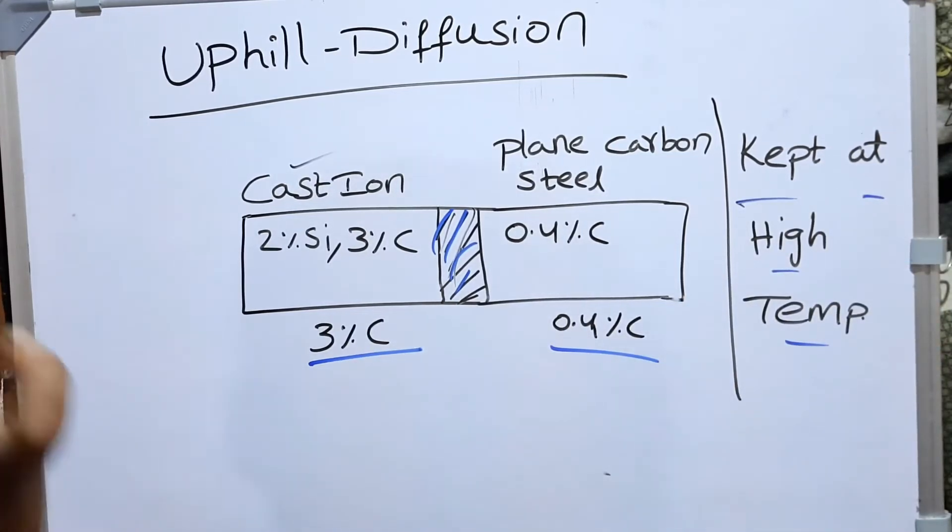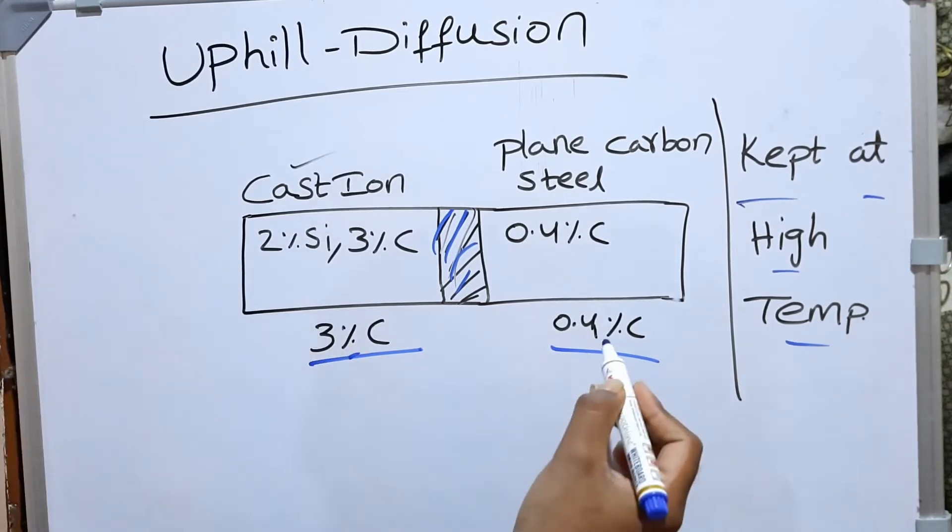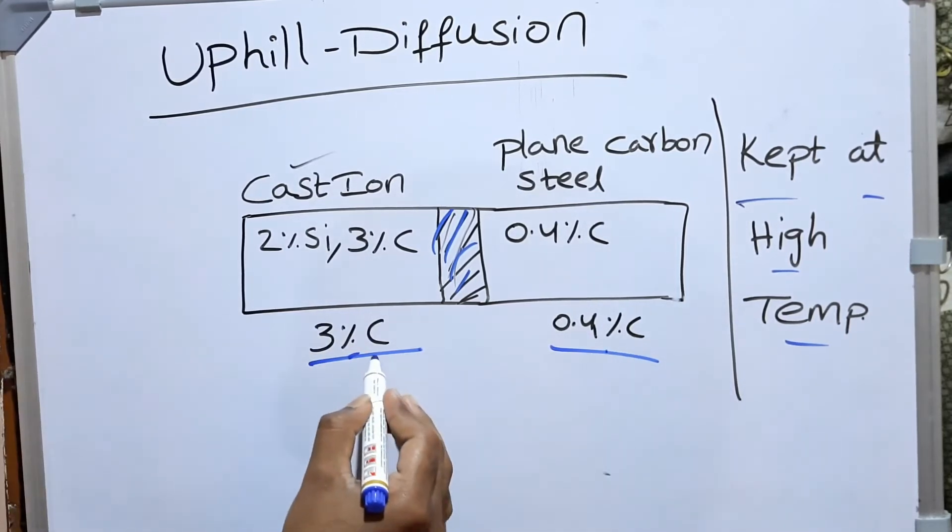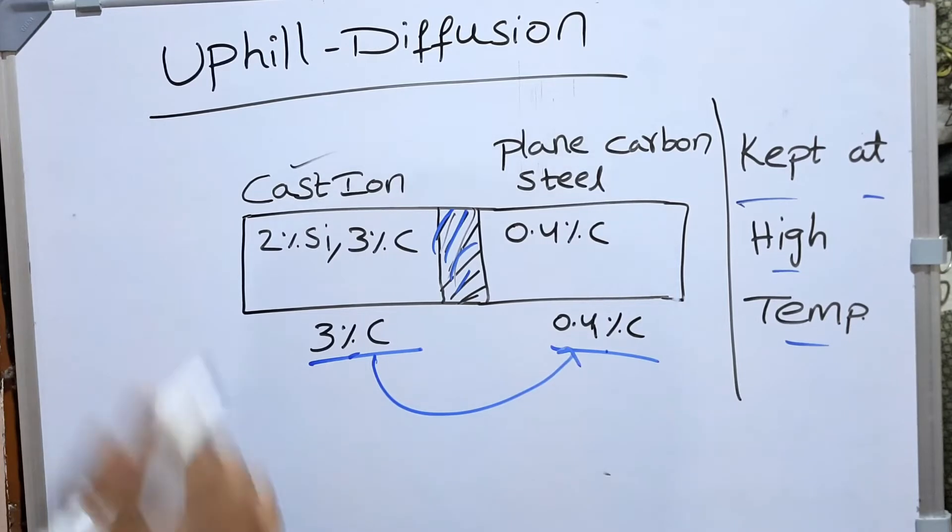But usually what we think is, here the carbon percent is 3%, here carbon is 0.4%. We expect carbon to diffuse from cast iron to plain carbon steel. But here is the twist.